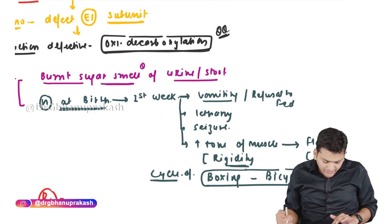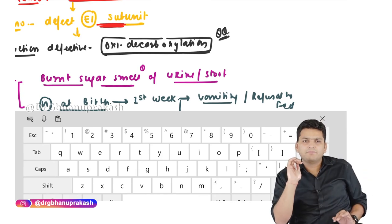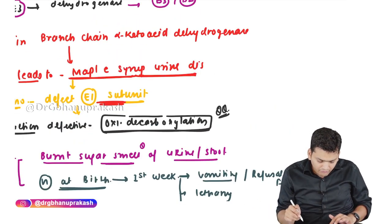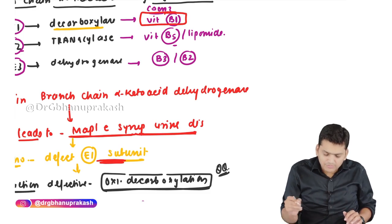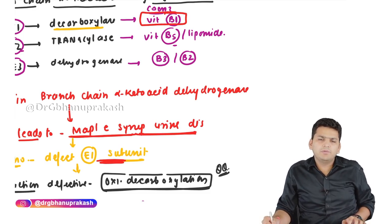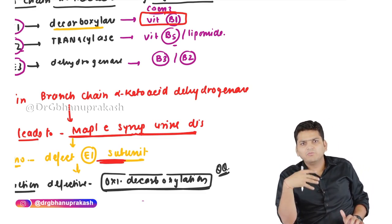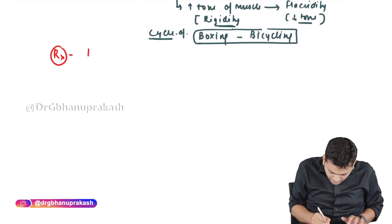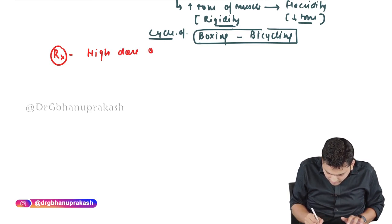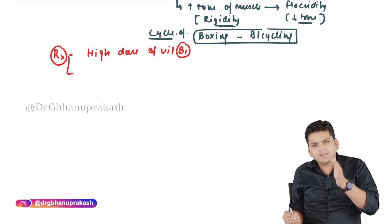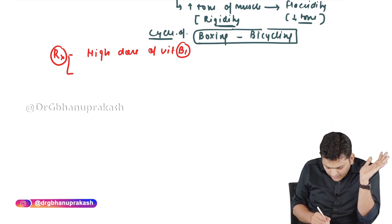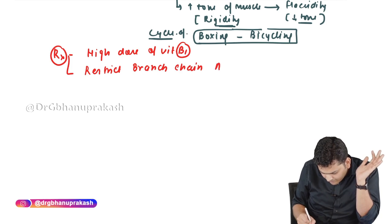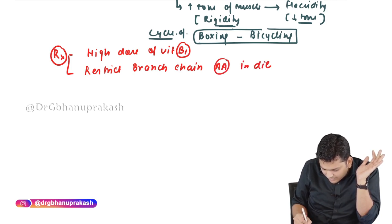The E1 subunit is defective in MSUD. To activate more E1 enzyme, we give a high dose of vitamin B1, since B1 is the coenzyme of E1 — whatever E1 is still present will work more effectively. So treatment includes supplementation with high-dose vitamin B1. The second treatment is to restrict branched-chain amino acids in the diet.